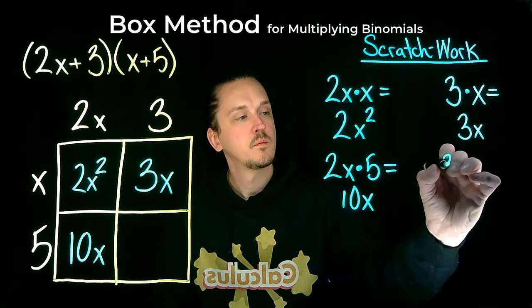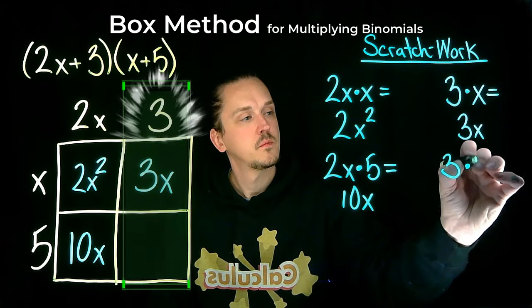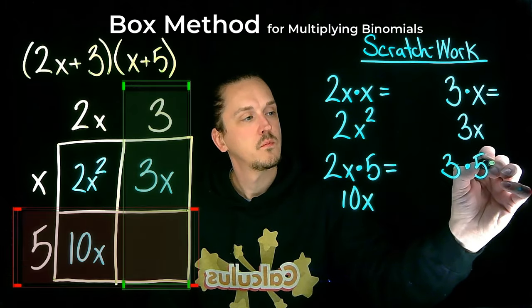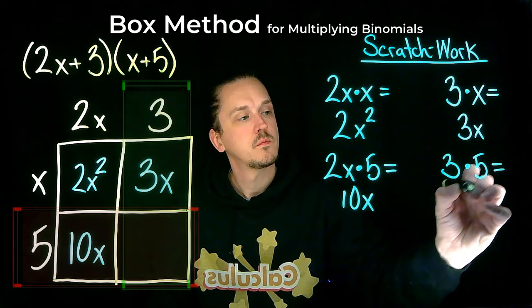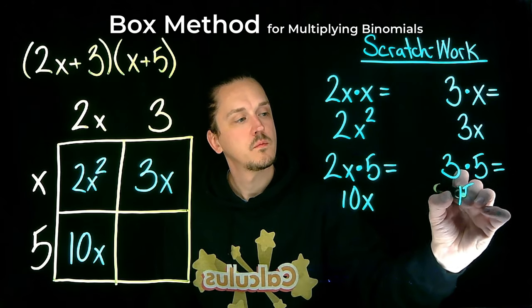And finally, in the bottom right box, we multiply the term of the second column, 3, by the term of the second row, 5. That's 3 times 5, which equals 15.